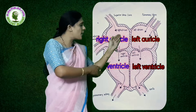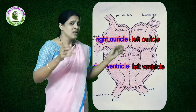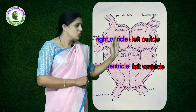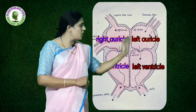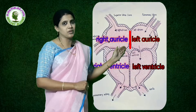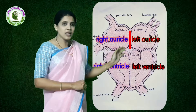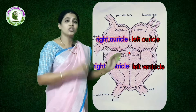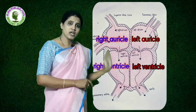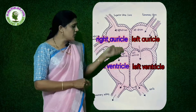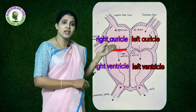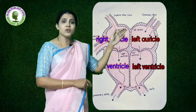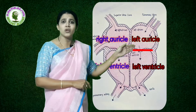Think of the heart like a house with four rooms. The two auricles are separated by a septum called the interauricular septum. The two ventricles are also separated by a septum — the interventricular septum. So there is no connection between right auricle and left auricle, or right ventricle and left ventricle. From the auricle to ventricle, the passage is guarded by valves.